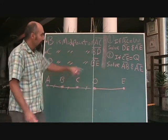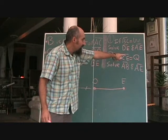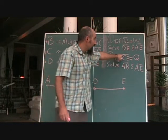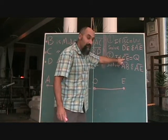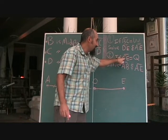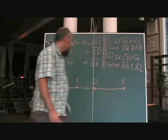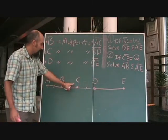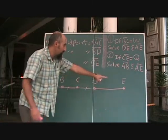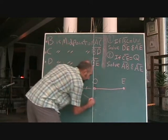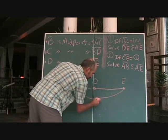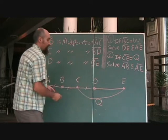So let's go to part two. If CE is Q, and this line, by the way, up here between the two letters means if line CE is Q, then solve for AB and AE. So let's figure out where AE is. So from here to here, they're telling us this is Q.